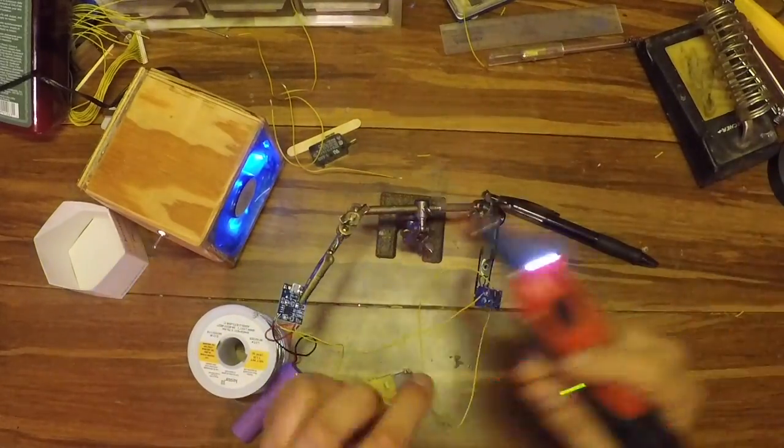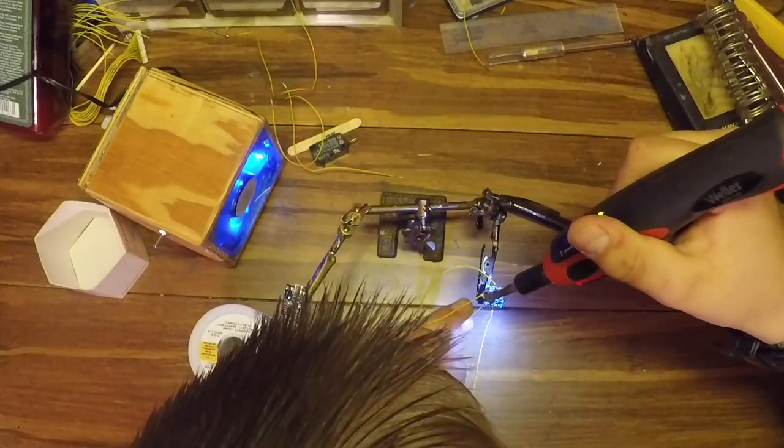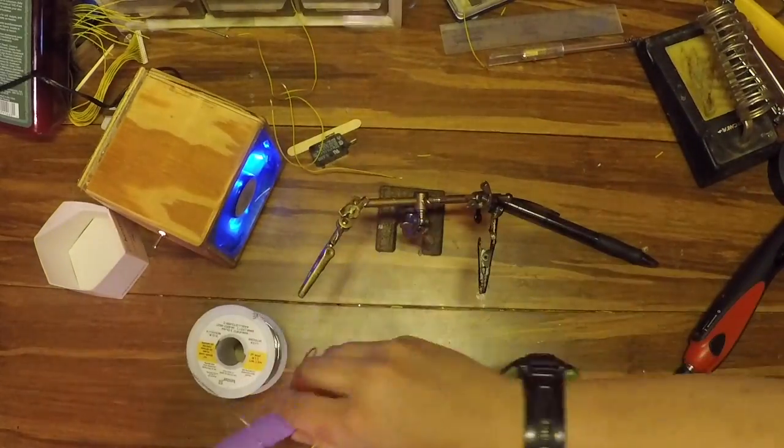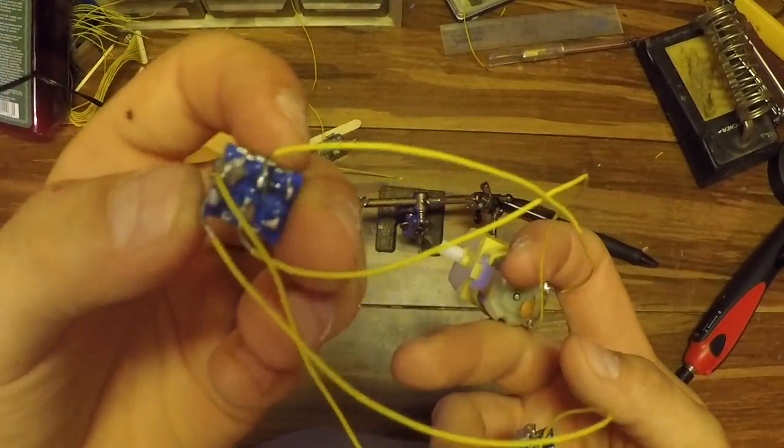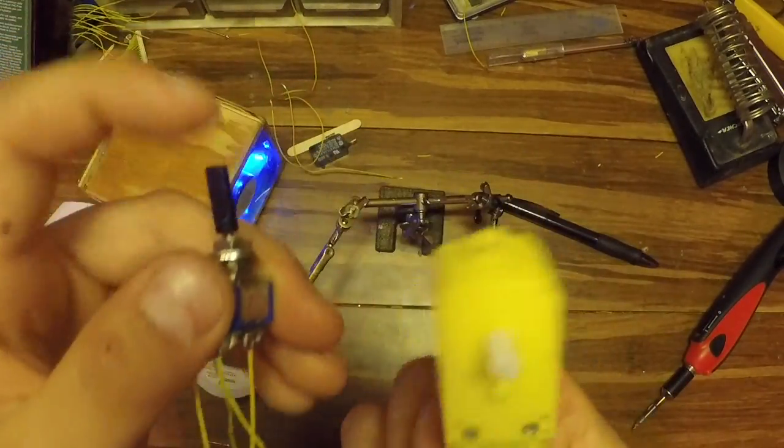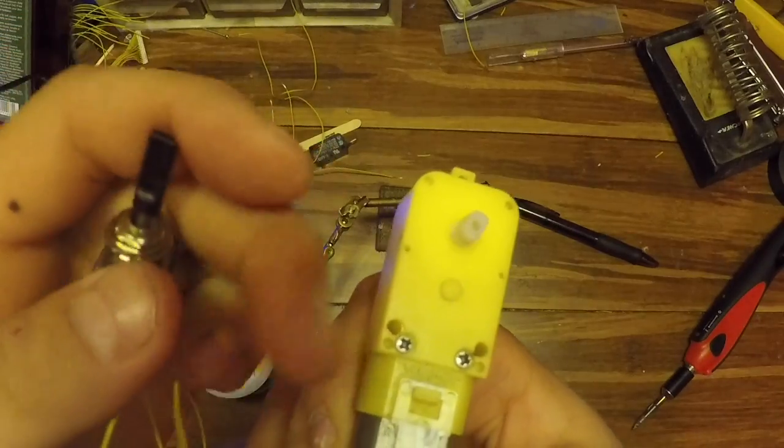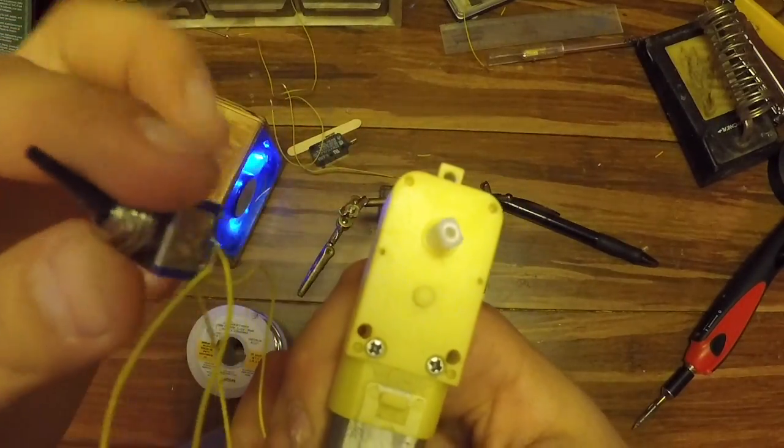Then you're going to want to solder the battery connections to pins one and two. And now you can see those are the ones on one and two and basically right now it's a simple circuit and whenever you turn on the switch the motor turns. Whenever you turn it off the motor stops.